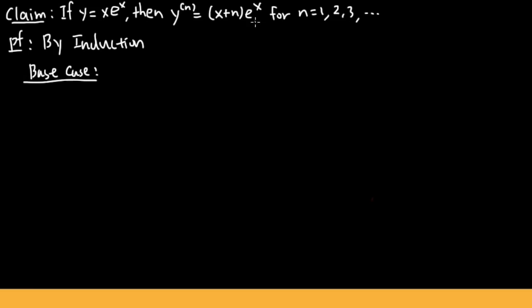First we will have to work out the base case. I'll write down n is equal to 1. This is also true when n is equal to 0, but that's just a boring situation because the zeroth derivative is just the function itself — that's redundant. So let me just begin with n is equal to 1 as the base case.